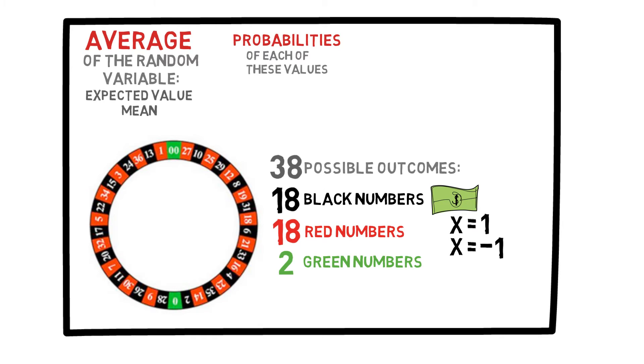What's the probability that x is equal to 1? That is, what is the probability that you win? In order to win, the outcome must be black. So, it would be 18 divided by 38. Meanwhile, the probability that you lose, that is, the probability that x is equal to minus 1, is 20 over 38.